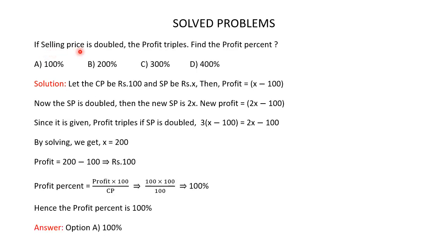If the selling price is doubled, the profit triples — find the profit percent. You are given four options. Let the selling price be Rs x and the cost price be Rs 100. Then profit equals selling price minus cost price, so profit equals x minus 100.